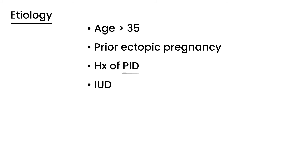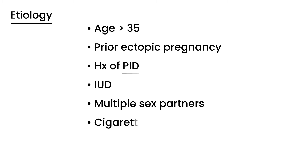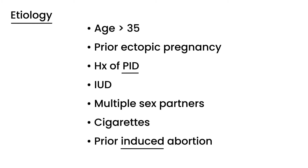Additional risk factors include the use of an intrauterine device for contraception, multiple sexual partners, cigarette smoking, and prior induced abortion — emphasis on induced, not spontaneous. Those are some of the main reasons ectopic pregnancy can occur.